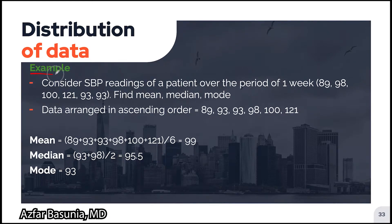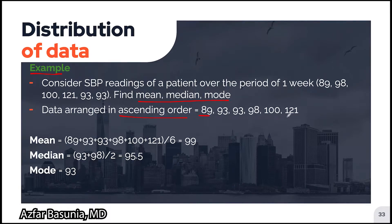Let's go over an example. Consider the systolic blood pressure readings of a patient over a period of one week — we are given six data points and asked to find the mean, the median, and the mode. First, we arrange the data points in ascending order. To calculate the mean, we add up all the data points and divide by the number of data points, which is six, and the mean comes out to 99.